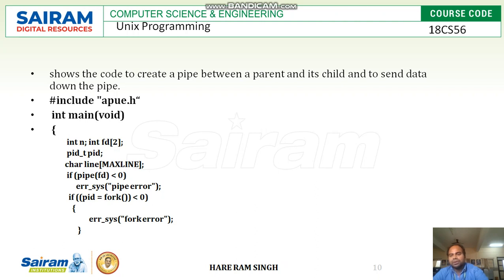Let us now study the same situation using a program. We are writing a program for inter-process communication using the pipe. We have defined some variables: integer n, an integer array fd[2] for two file descriptors, pid_t pid, and char line[MAXLINE]. Here, we are creating a pipe — if pipe(fd) returns less than 0, it prints a pipe error. Otherwise, if the pipe is created successfully, it returns two file descriptors.